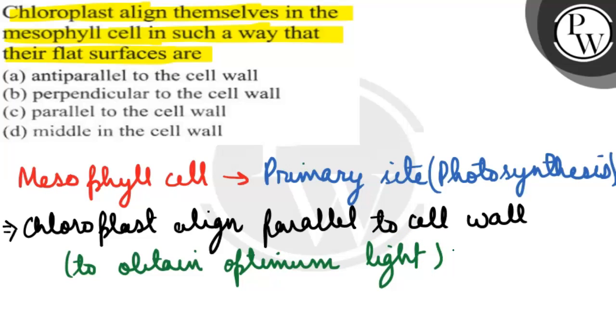So from this we got to know that our right answer will be option C. That is, chloroplast align themselves in the mesophyll cells in such a way that their flat surfaces are parallel to the cell wall, so that they can obtain optimum light conditions.